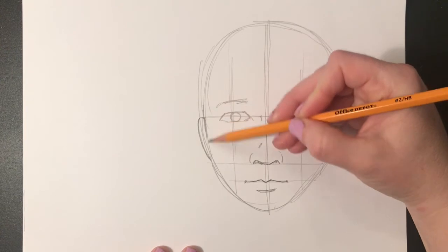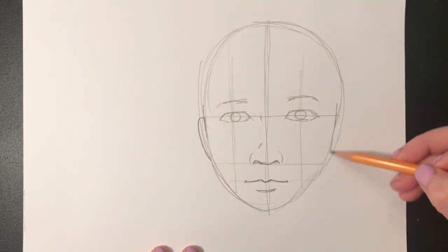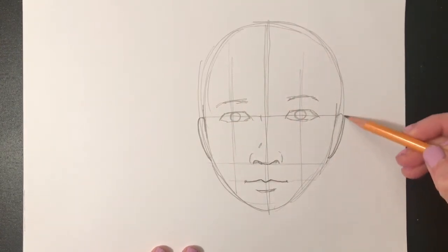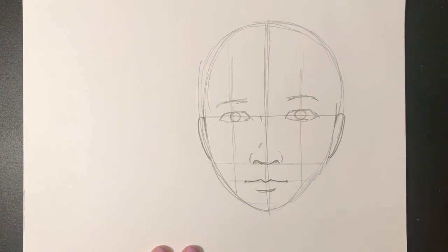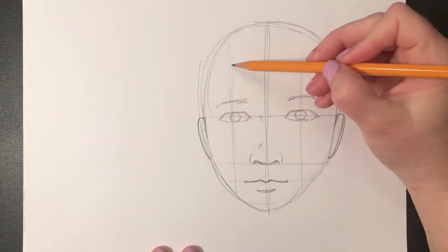You're not gonna see much of the ear from this viewpoint. When the person is looking straight at you, you really just see a tiny bit of the ear, or maybe not any of the ear at all if the person's hair is covering that up.